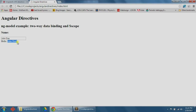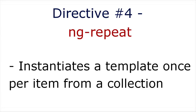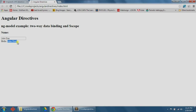Now let's move on to the next directive, which is ng-repeat. Directive number four: ng-repeat. According to the website, the ng-repeat directive instantiates a template once per item from a collection. Basically, if we have an array with more than one item, we can use ng-repeat to display each of these items with very little code. Let's try an example — first let's create an array with several items, each with two properties: name and number.